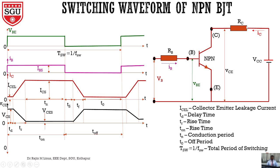In this NPN transistor, the right side shows the circuit diagram which will explain the switching characteristics of the NPN transistor. The base terminal is connected to the P layer in this NPN transistor. In order to make the conducting state, or in order to make the bipolar junction transistor work like a switch, the base-emitter junction should be forward biased. We give the base terminal as positive with respect to emitter, through the base resistance Rb. The collector is connected to the DC supply through the collector resistance.